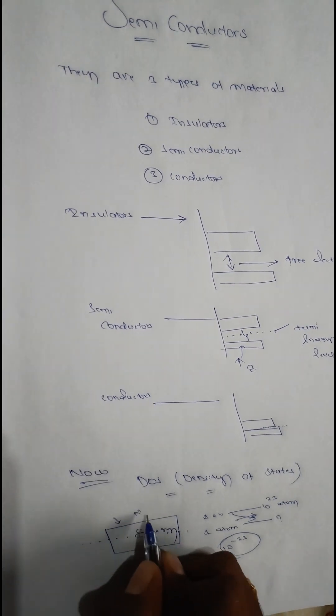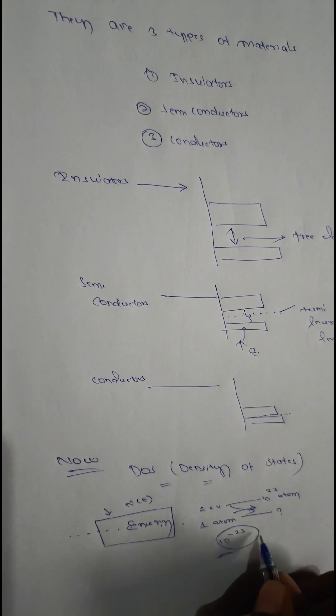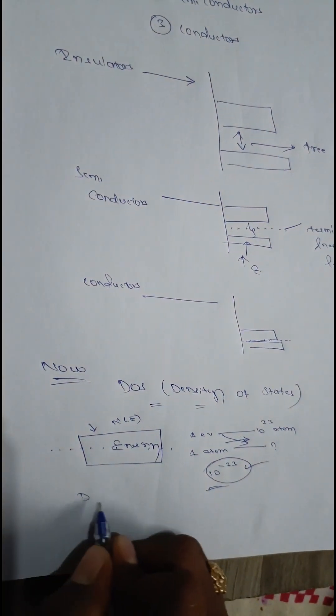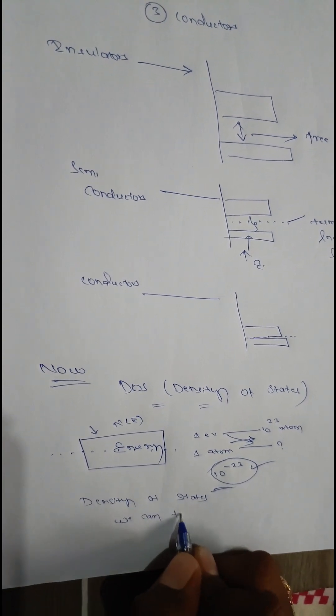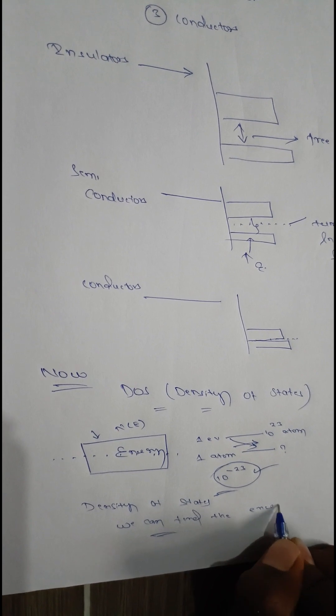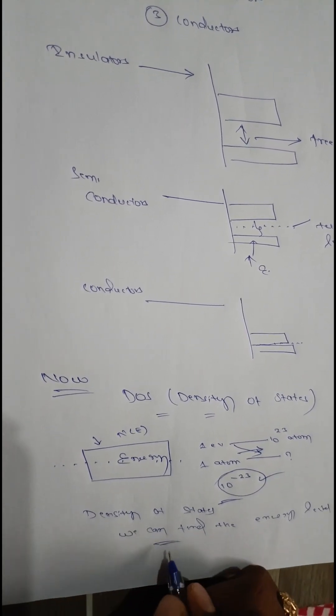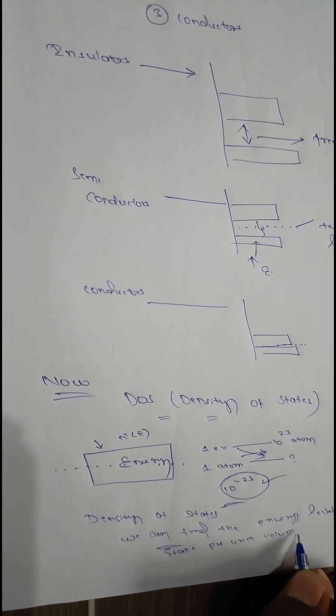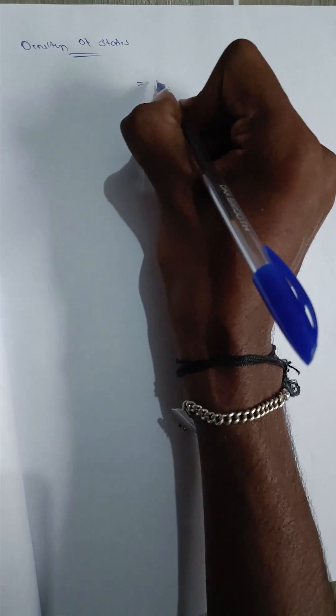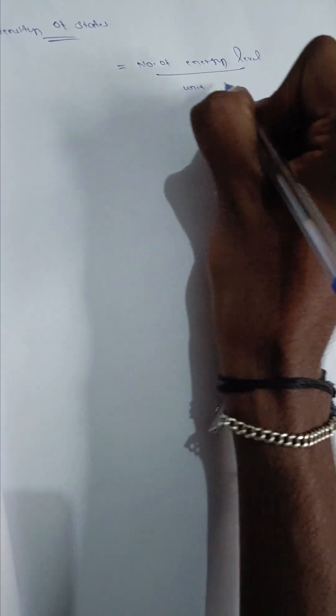For example, I want to find the energy per unit value. It gives 10 power minus 23, which is a small value. So by using density of states, we can find the energy level states per unit value. Density of states equals the number of energy levels by unit value. Density of states is represented as Z(E)dE equals N(E)dE, which is the number of energy levels per unit value.